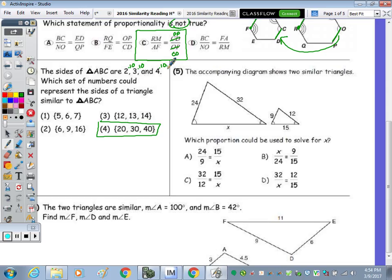Number five, which proportion can be used to solve for X? The correct answer is D, and that is because it compares 32 to X. So this to this, and this picture would be this to this, 12 over 15. So you're comparing the same two sides in the same direction.